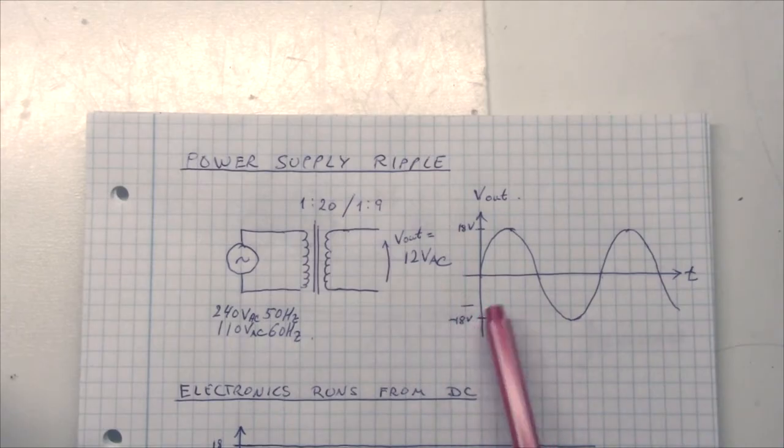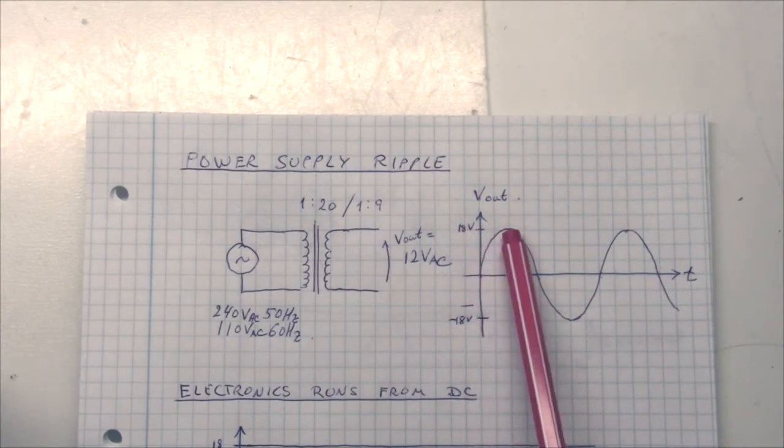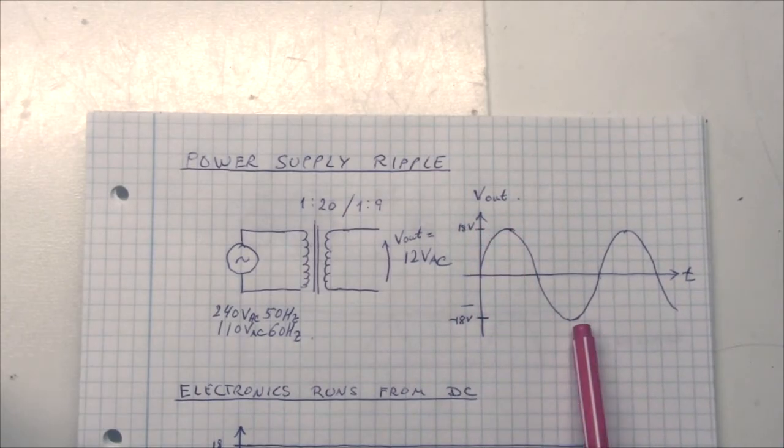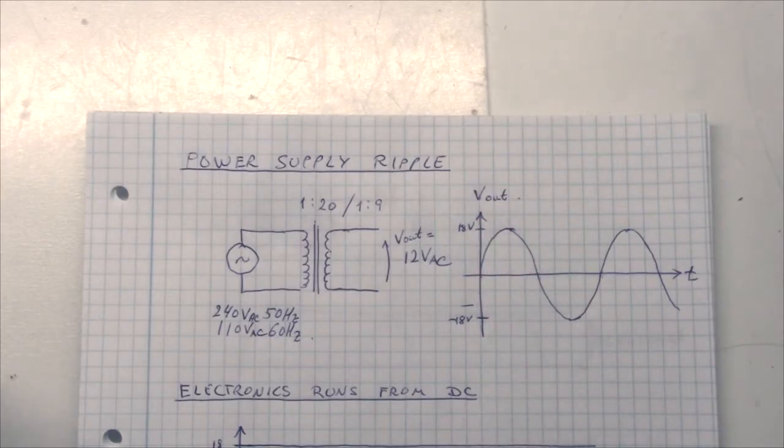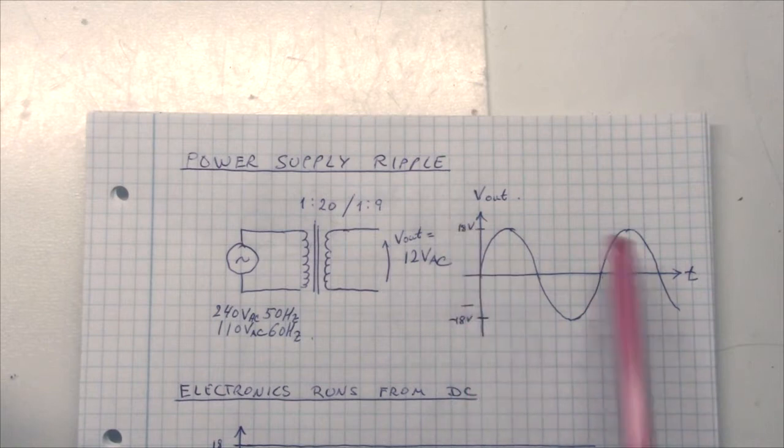But the output should be a sine wave, and the peak value should be plus 18 and minus 18. The reason the peak value is not 12 volt is that this sine wave here, with a peak value of 18 plus minus 18, will be able to generate the same amount of power as a DC power supply with a straight 12 volt output.